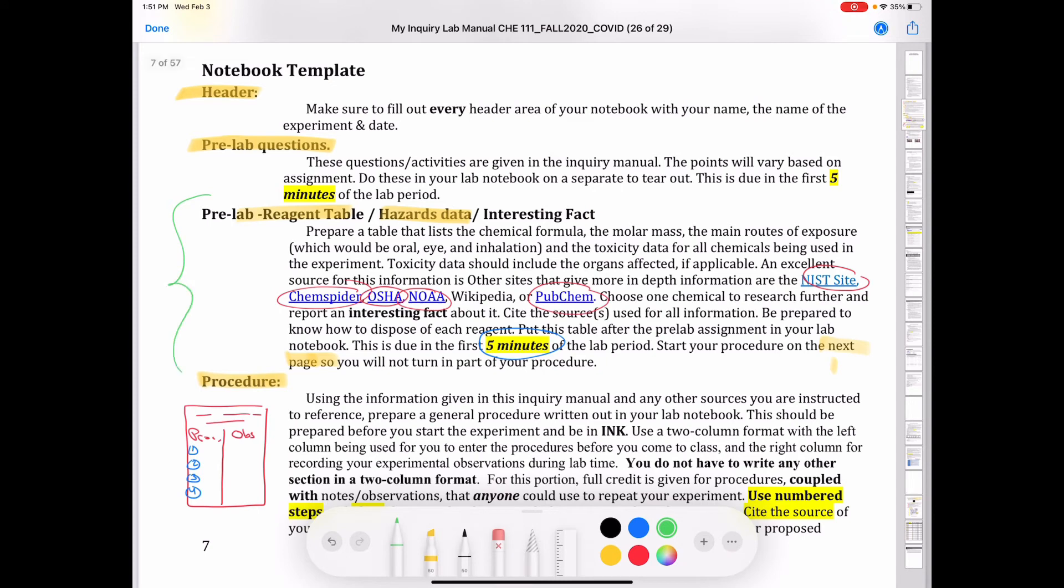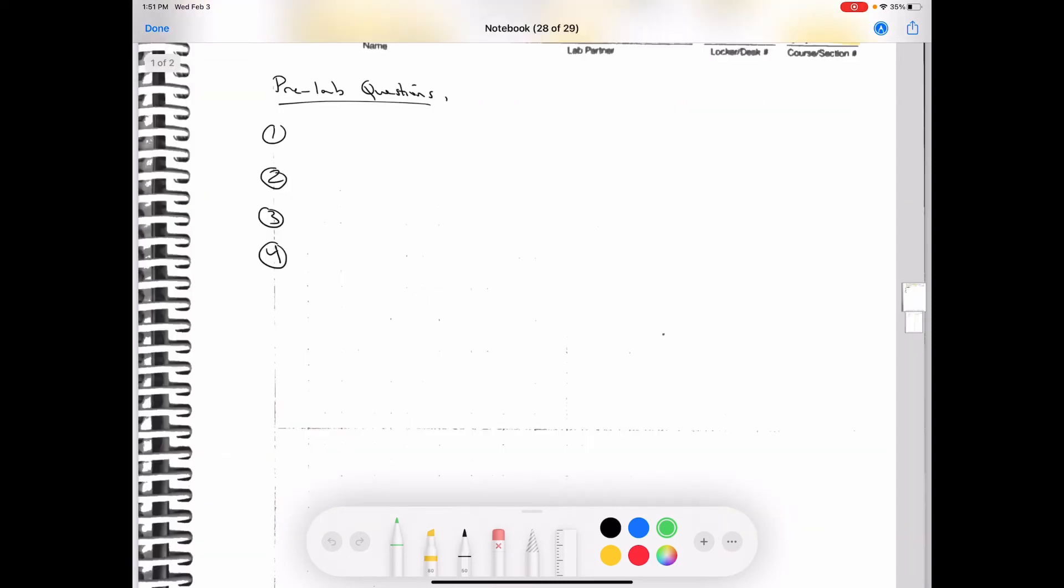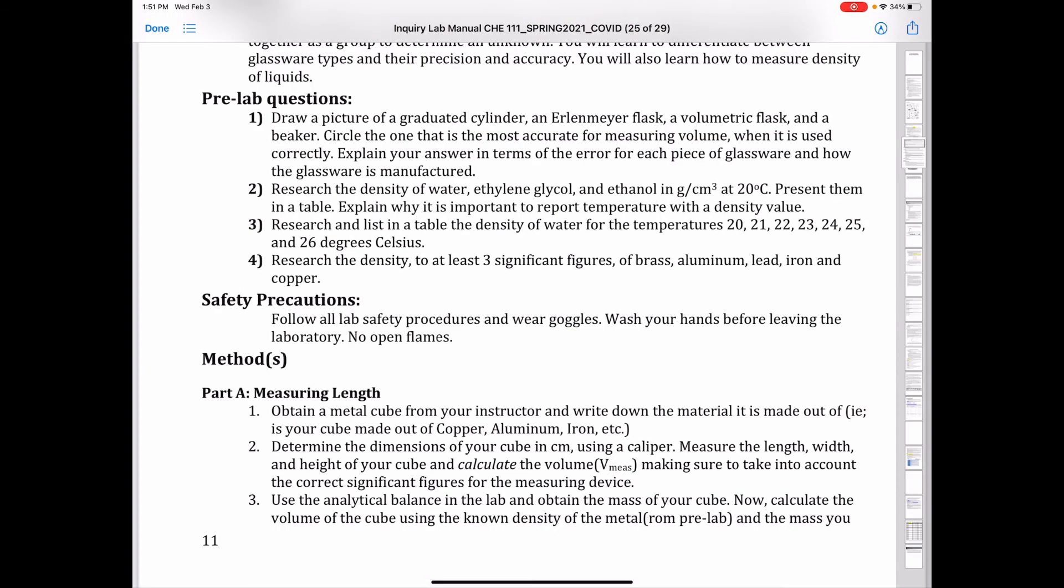Next, you're going to have your reagent table. And so after you're done answering the pre-lab questions, you're going to have your reagent table, and you're going to put this in table format. And if you're wondering which chemicals to include in your reagent table, I'll help you out with this one. They're all found in the pre-lab questions. You're going to include water, ethylene glycol, ethanol. You're also going to include brass, aluminum, lead, iron, and copper. So all of those are going to be found in your reagent table.